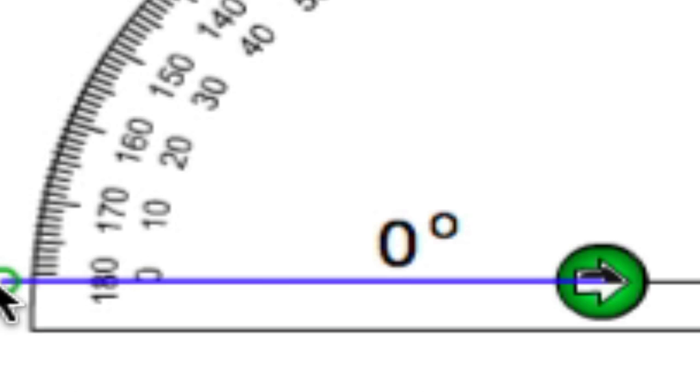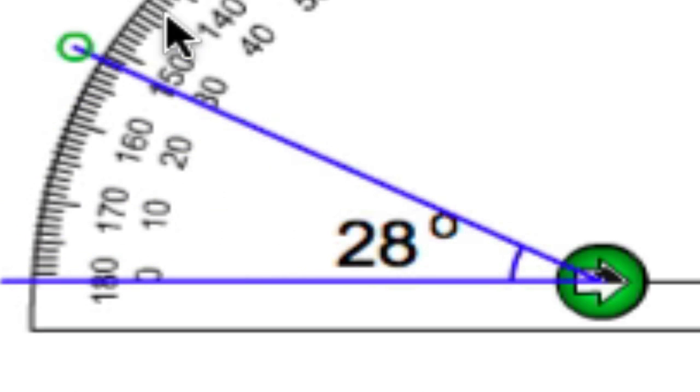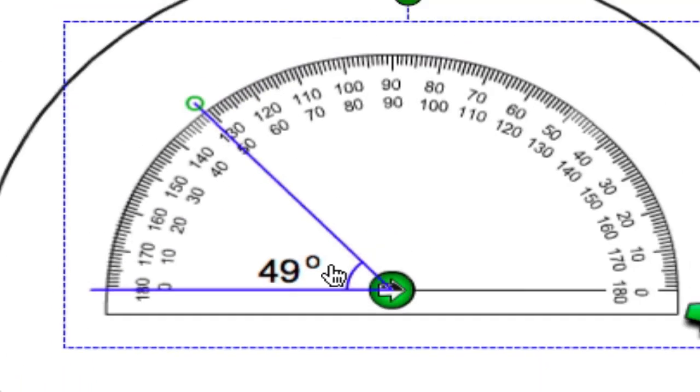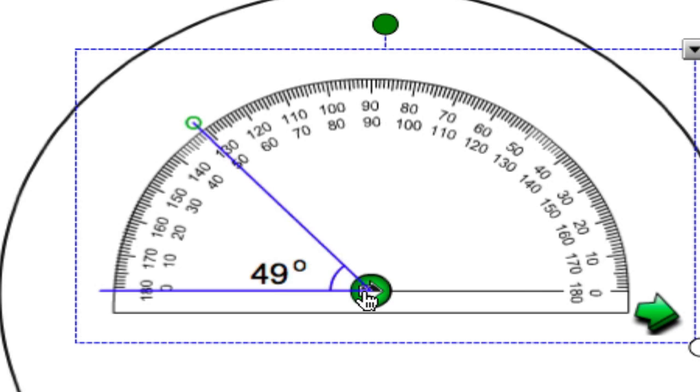If you start on this side, and this is your zero degrees, you would use the inner track to measure. Does it matter which track you're using? Sometimes. But for the most part, you can make a choice. Just remember which track you're using, the outer or inner.